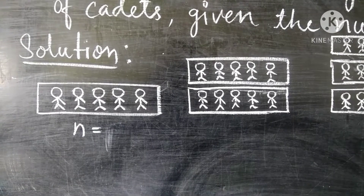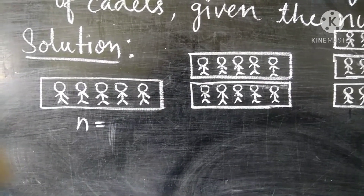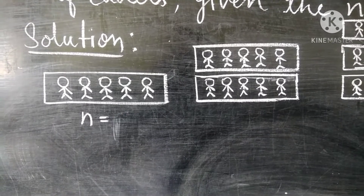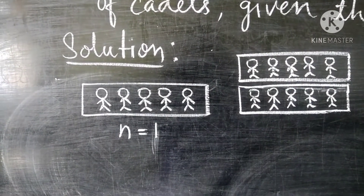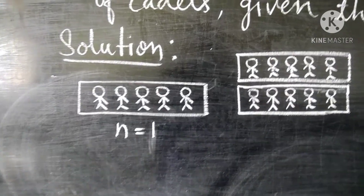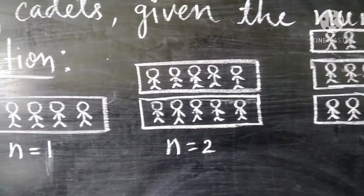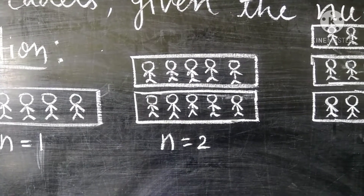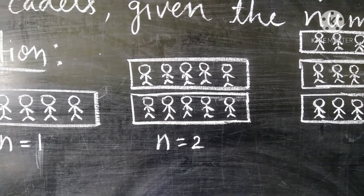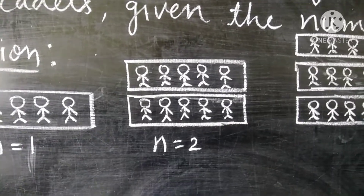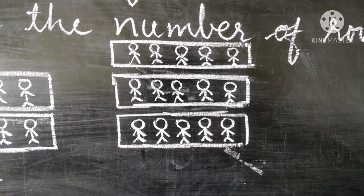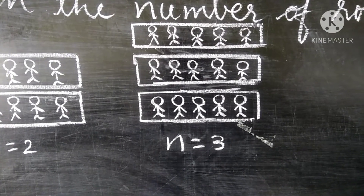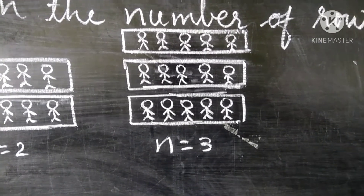This is 1 row. So n equals 1 means 1 row and the cadets are 5. For 1 row, there are 5 cadets. n equals 2 means there are 2 rows and then cadets will be 10. And for 3 rows, n equals 3, cadets are 3 into 5, which means 15.